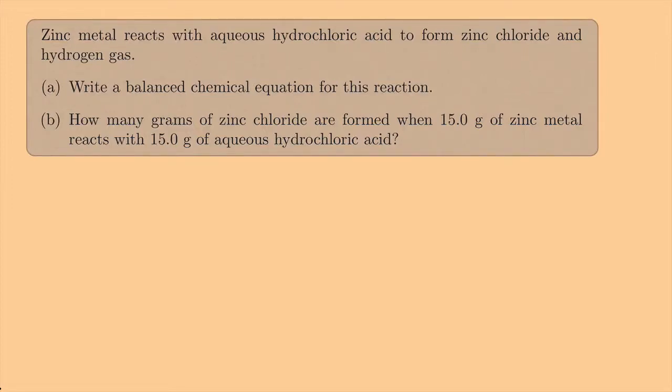Zinc metal reacts with aqueous hydrochloric acid to form zinc chloride and hydrogen gas. Part A asks us to write a balanced chemical equation for this reaction, and Part B asks how many grams of zinc chloride are formed when 15 grams of zinc metal reacts with 15 grams of aqueous hydrochloric acid.